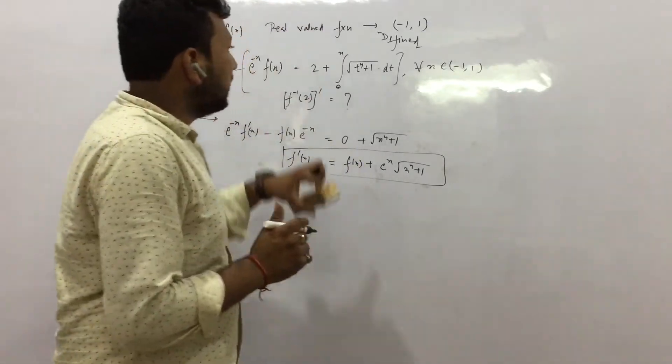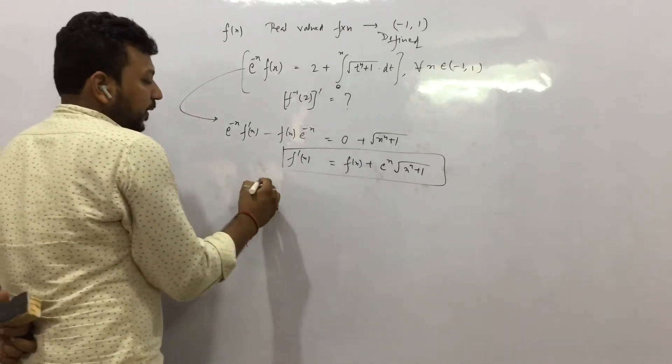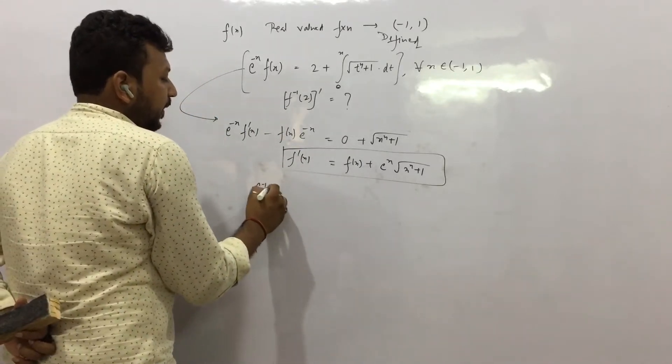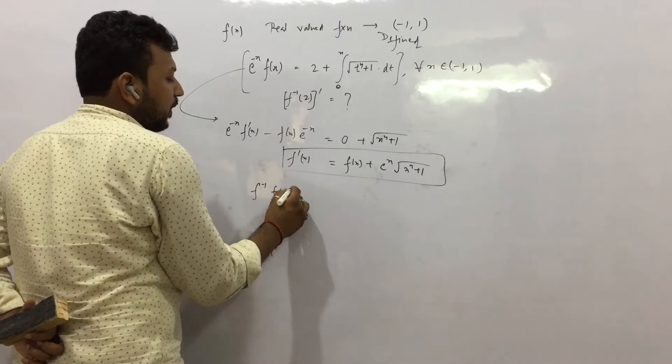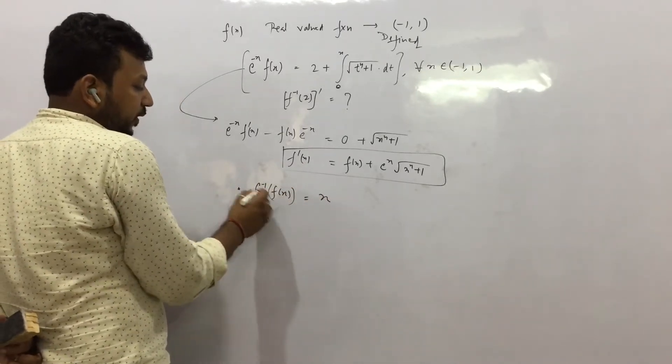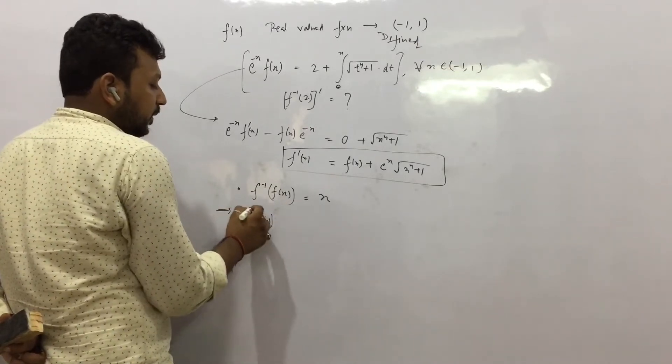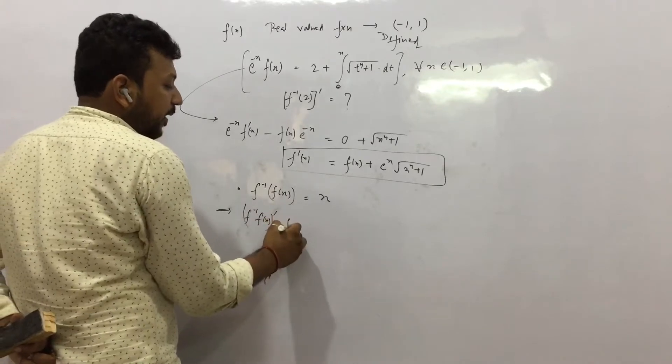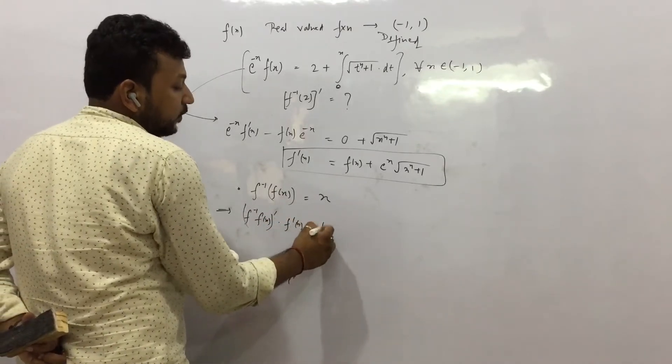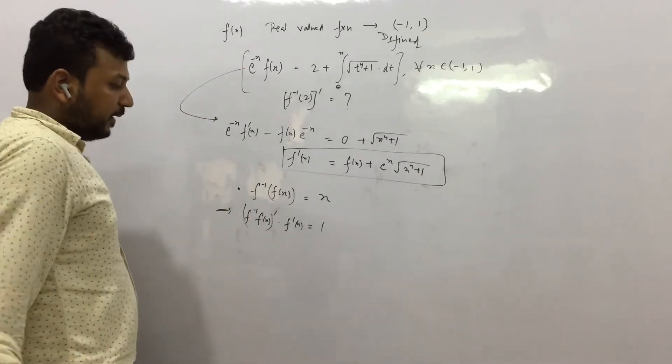We just built the derivative of this, we need to find this. Now in inverse function we can always write f inverse of f(x) is x - that is the definition. If we do the derivative of this we have f inverse of f(x) dash into f dash x equals 1, derivative of x is 1. So this is another statement we are getting.